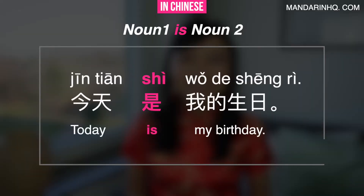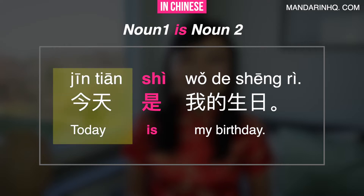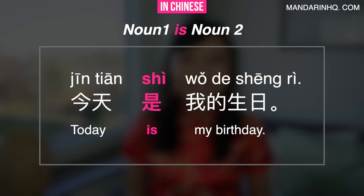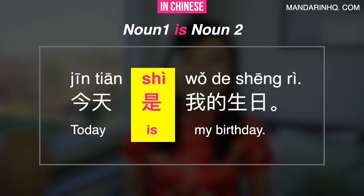Let's take one more example: 今天是我的生日 — 'Today is my birthday.' Here, 今天 is a noun and 我的生日 is a noun phrase, so we use shì to connect them: 今天是我的生日.